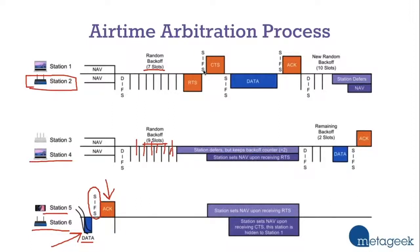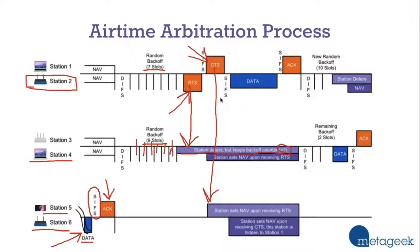Station two is using RTS/CTS with its client device, so it sends a Request to Send and the other station replies with a Clear to Send. When station two transmitted its Request to Send, that let station four know something else is talking — it needs to back off, but it keeps its backoff counter: nine minus seven is two, so its remaining backoff counter is two. When station one transmitted the Clear to Send, it let everything else on the channel know to set a NAV timer — a Network Allocation Vector — basically synchronizing everyone to stay quiet for that duration while station one and two have their conversation.